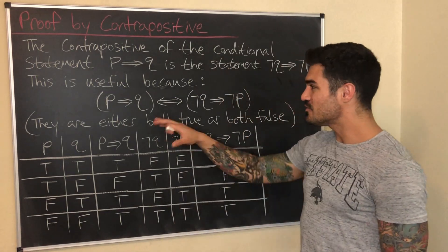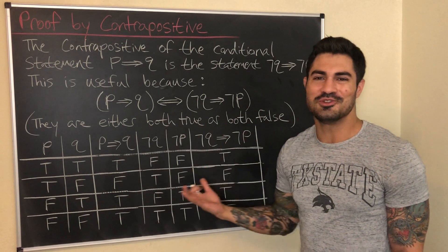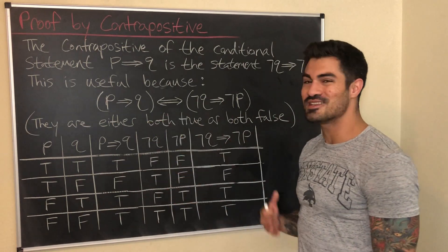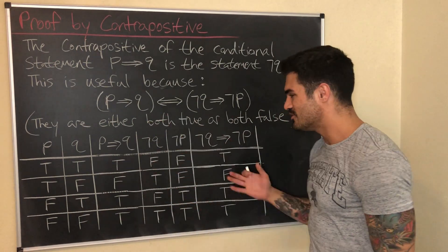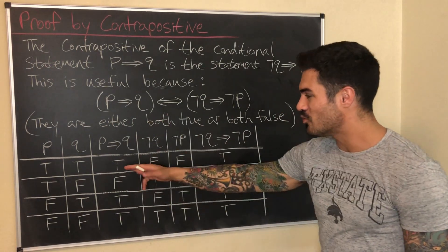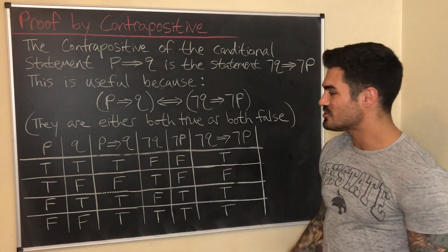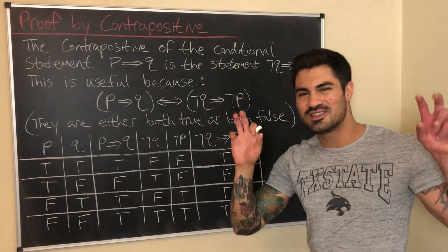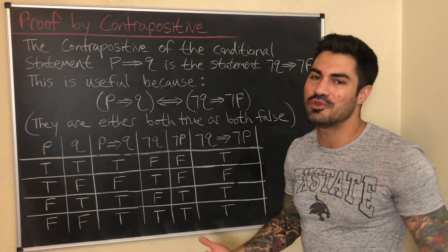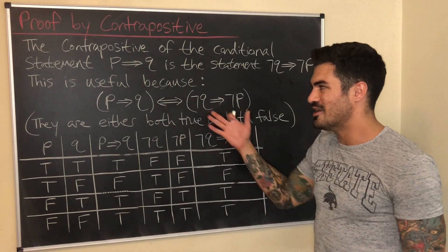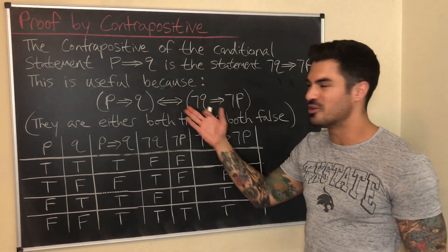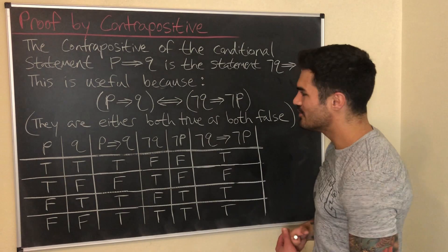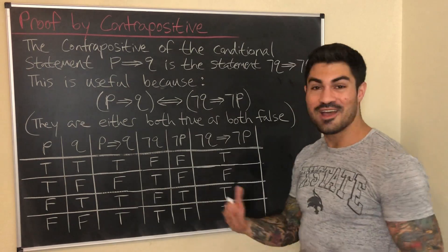Lastly, I just wanted to show the truth table in case you're not convinced these are logically equivalent. You can clearly see that whenever one is true the other is true, and whenever one is false the other is false. They have the same truth table, therefore they're logically equivalent — there's a biconditional between them.